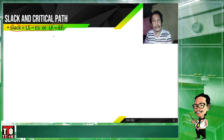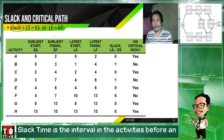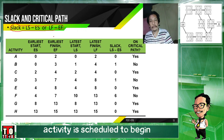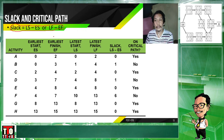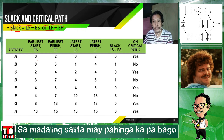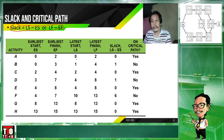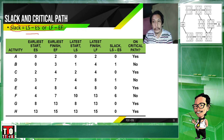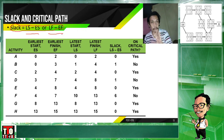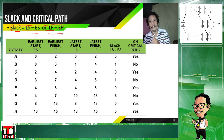Okay? If you have the node values from the nodes section, it's there. Now, looking at our forward and backward pass values in the network: you could choose to use either LS minus ES or LF minus EF. Okay? You could choose between the two, but don't interchange them. For example, don't do LS minus LF or LS minus EF. No. It's either LS minus ES or LF minus EF.